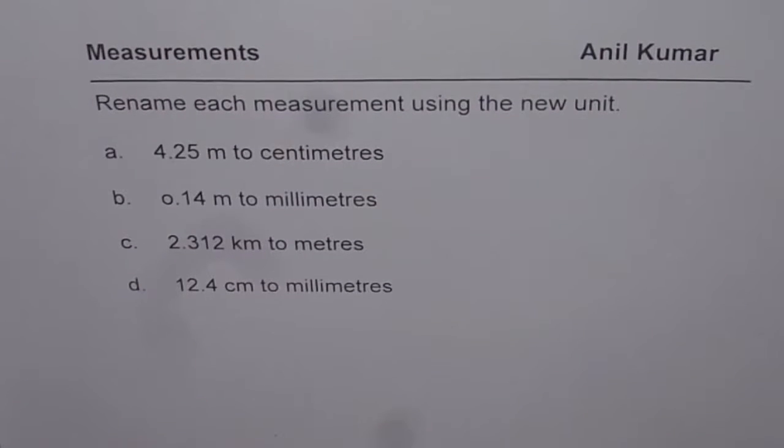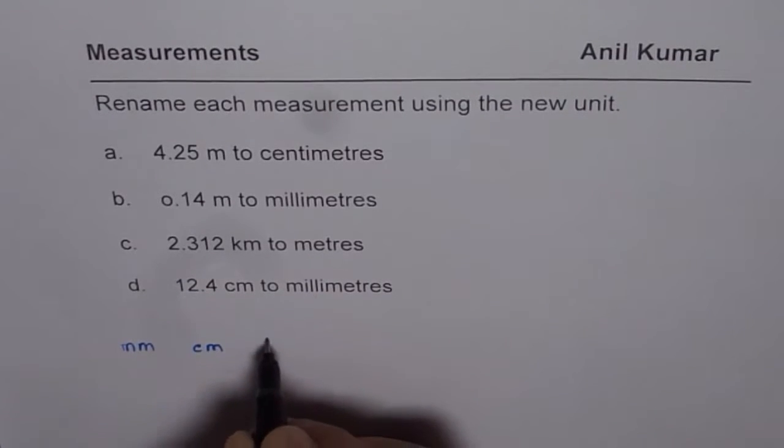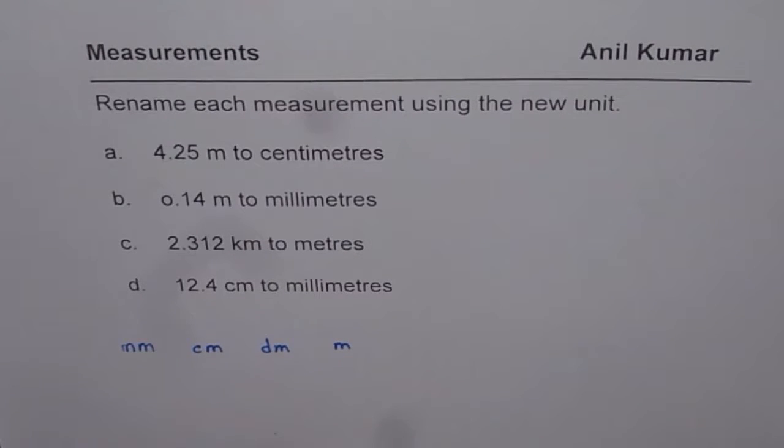Let us understand how meters and centimeters are related. Let me write down the metric scale which we can start from millimeters and then we have centimeters, decimeters and then meters. Now it is a factor of 10 which relates each one of them.